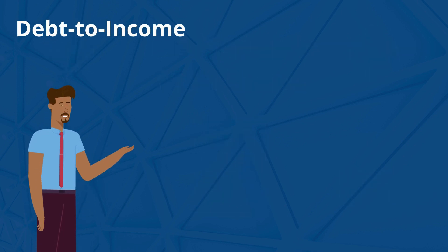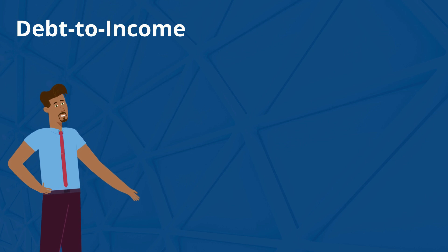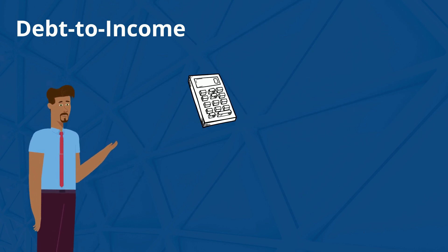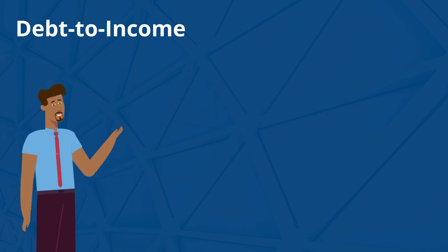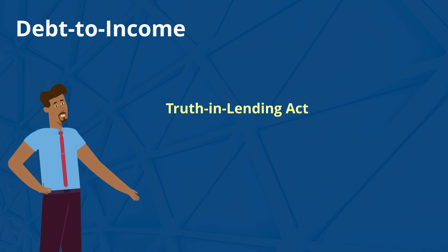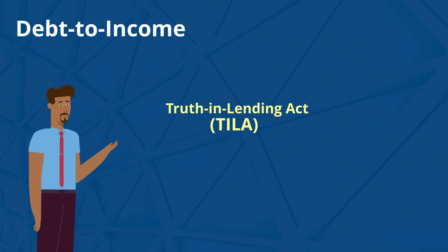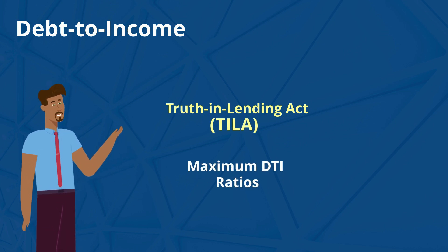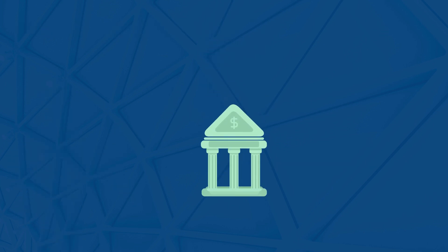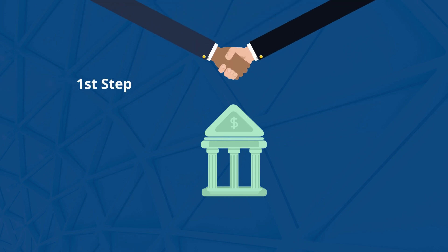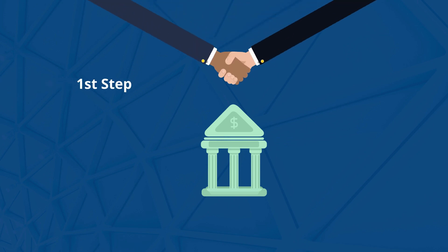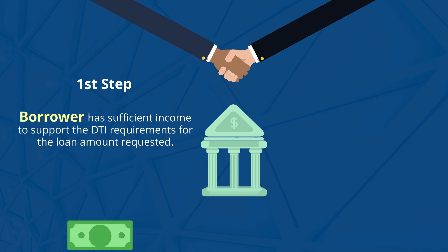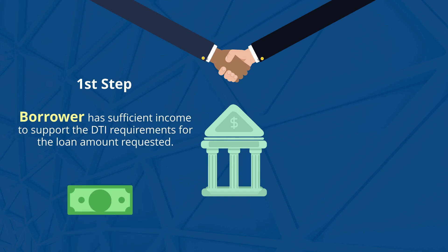Debt to Income. Mortgage loan program guidelines include debt-to-income calculations. A loan program and the Truth in Lending Act, or TILA, have maximum DTI ratios allowed for the loan program and mortgage rules. When determining a loan program for which the borrower qualifies, one of the first steps is to determine if the borrower has sufficient income to support the DTI requirements for the loan amount requested.